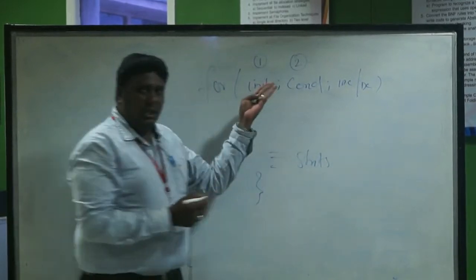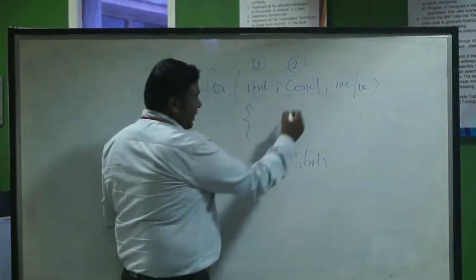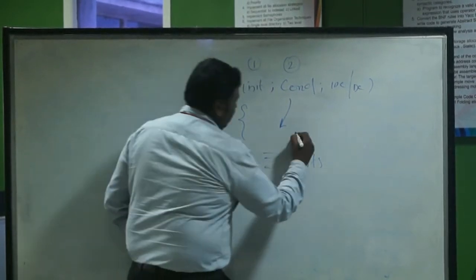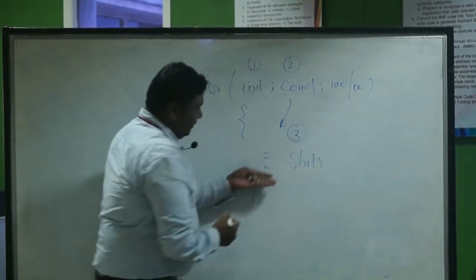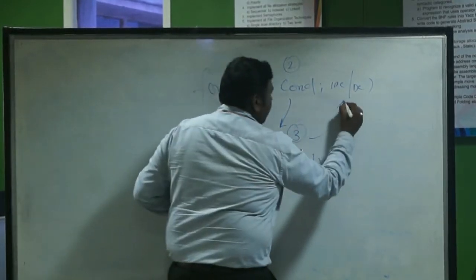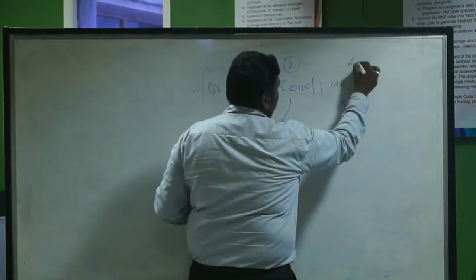After the condition, if it is true, the list of statements which is inside the for loop is going to be executed. This is going to be the third step. Then after the statements are executed, before it ends, it goes back to the incrementation or decrementation. This could be the fourth step.